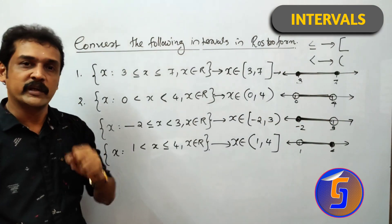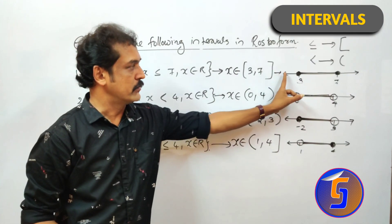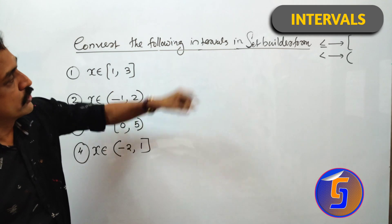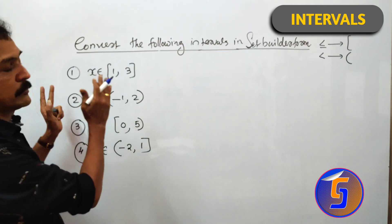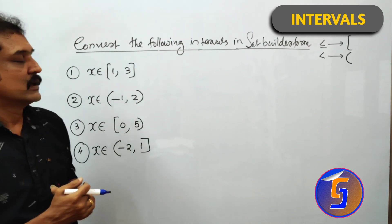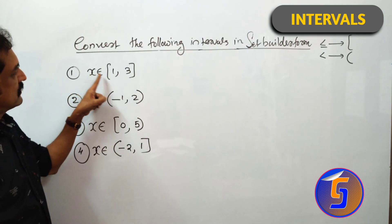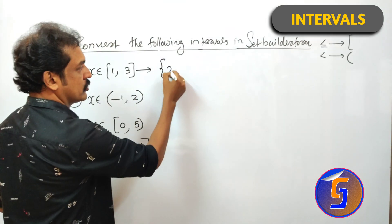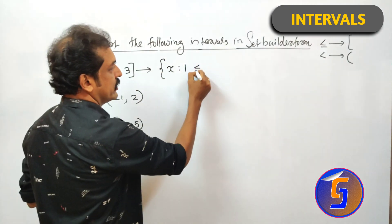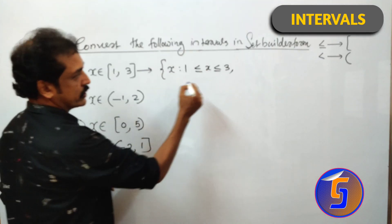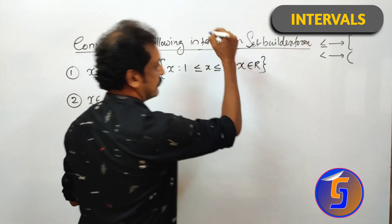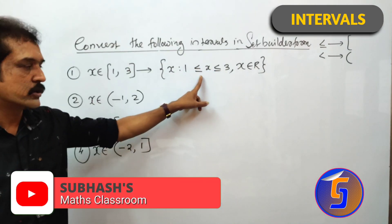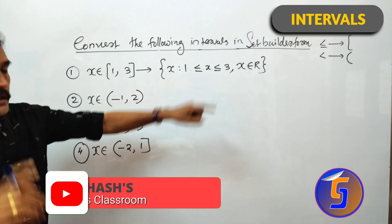Let's start with converting intervals. Convert the following intervals in set-builder form. First question: x element of closed interval [1, 3] can be written in set-builder form as: set of all x such that 1 ≤ x ≤ 3, x element of R. For a square bracket, we use less than or equal to sign.